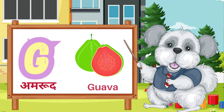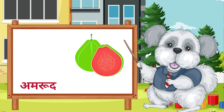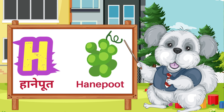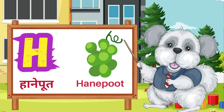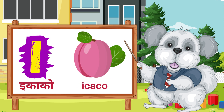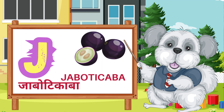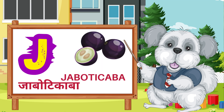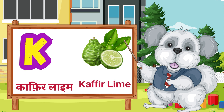G is for guava. H is for honeypot. I is for icago. J is for jabotidum. K is for kefir lime.